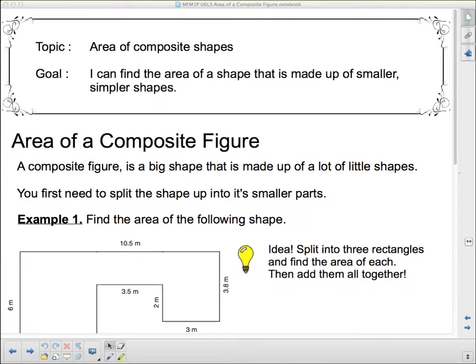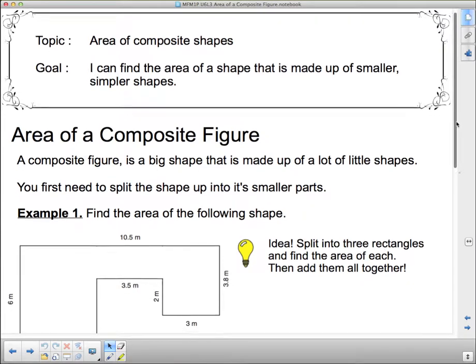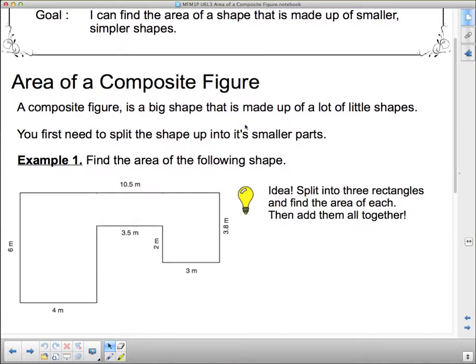So we're looking at the area of a composite figure and we're going to go through a couple of examples. A composite figure is a big shape made up of a lot of little shapes, and you first need to split the shape into its smaller parts.